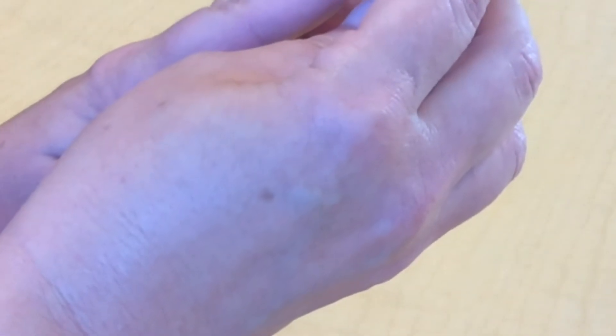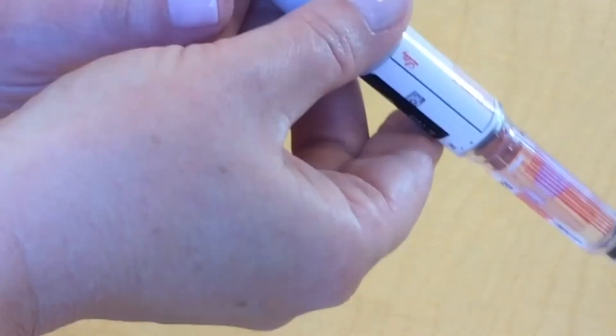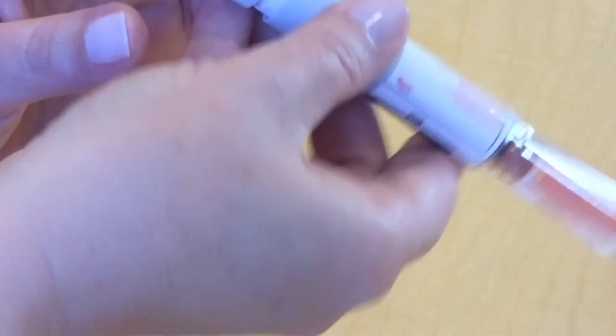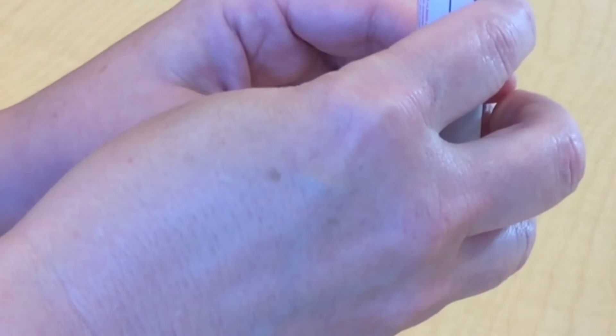Then, grasp the non-insulin end of the pen and invert it 10 times. Do not shake your insulin pen.